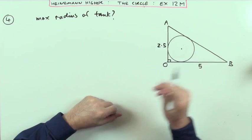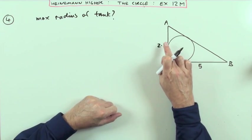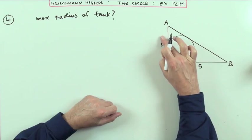So what would be the maximum radius of that tank? I'll change them all into rational numbers, so I'll make that 5 over 2.